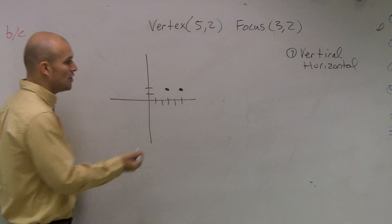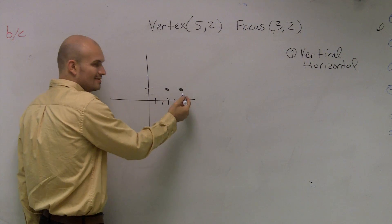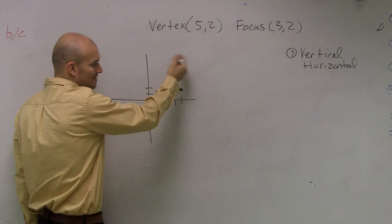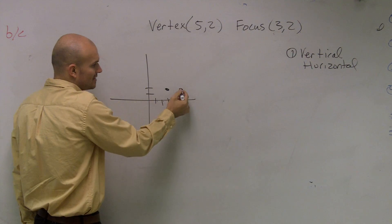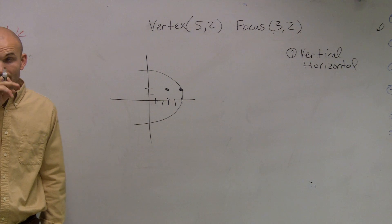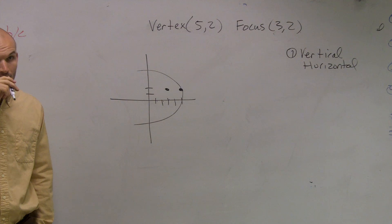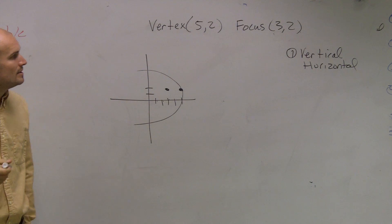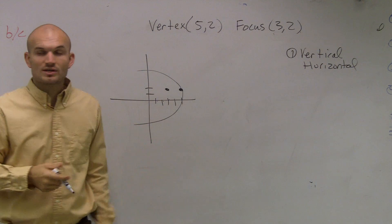So therefore, if I just did a rough sketch, I know my parabola can't be vertical, can't be up or down, can't be to the right, but it's going to look something like this. So now we know that's going to be a horizontal.